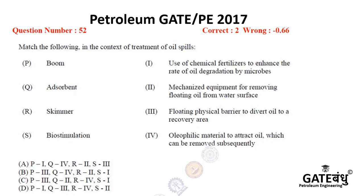The method of booming is based on the separation of oil from an oil spill or in a water separation treatment plant after oil is produced. A boom is basically a physical barrier that is used to separate out and prevent oil from spreading — a floating physical barrier to a recovery area.